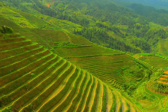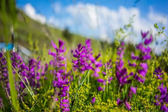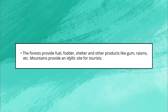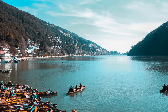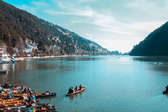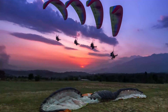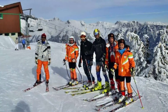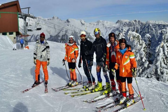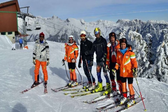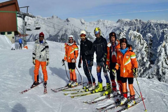Water from the mountains is also used for irrigation and generation of hydroelectricity. The river valleys and terraces are ideal for cultivation of crops. Mountains have a rich variety of flora and fauna. The forests provide fuel, fodder, shelter and other products like gum and raisins. Mountains provide an idyllic site for tourists, who visit for their scenic beauty. Several sports like paragliding, hang gliding, river rafting, and skiing are popular in the mountains.